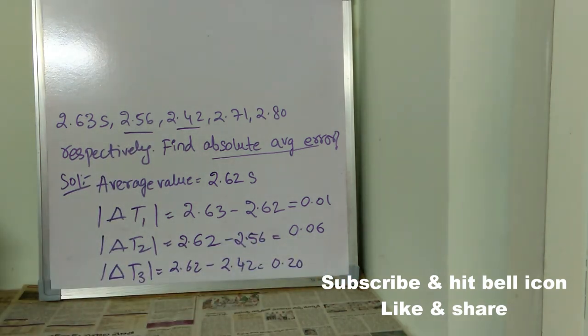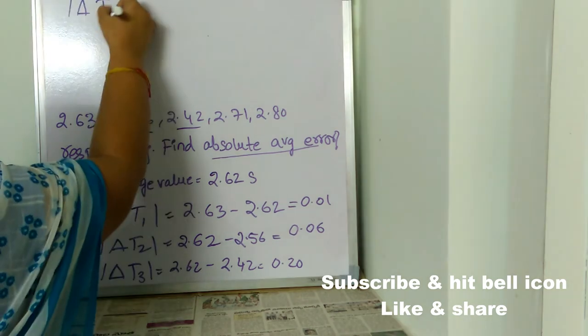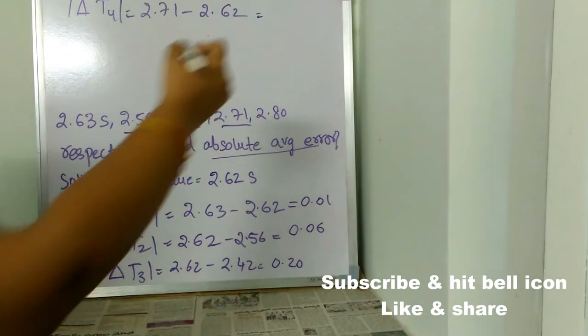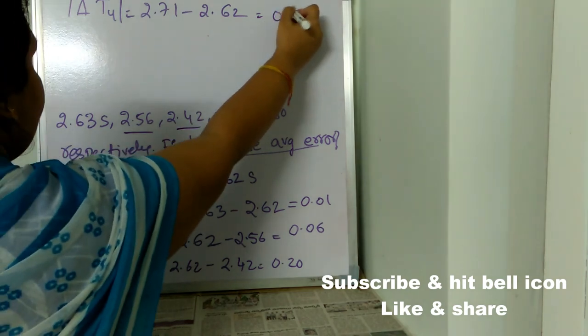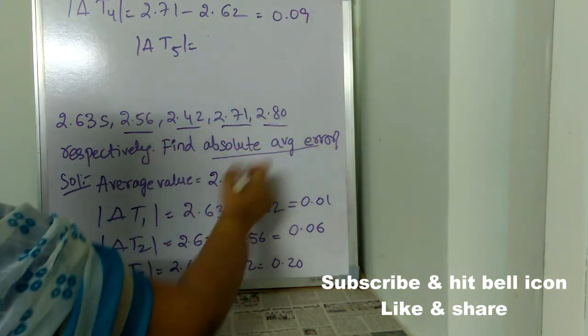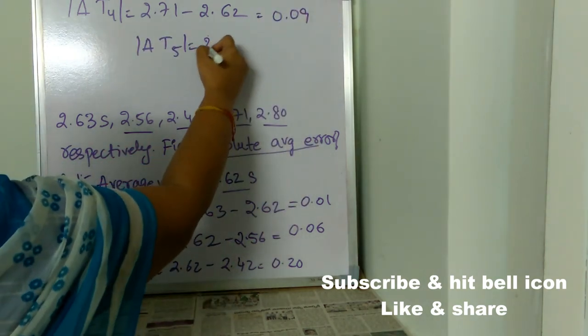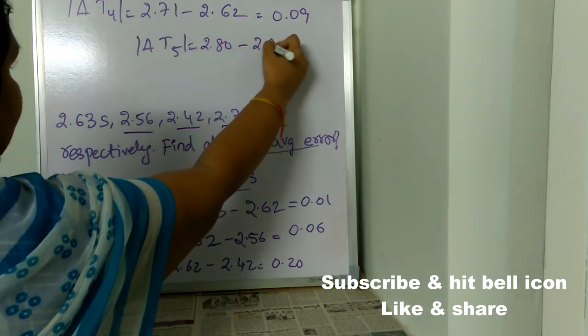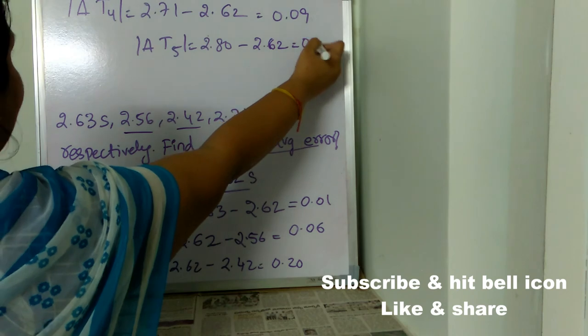Like this, we need to find the differences. We need to find for other values also. At T4, delta T4 is also very easy. The difference between fourth value and the average which is 0.09. The difference between fifth value and the average. 2.80 minus 2.62 which is 0.18.